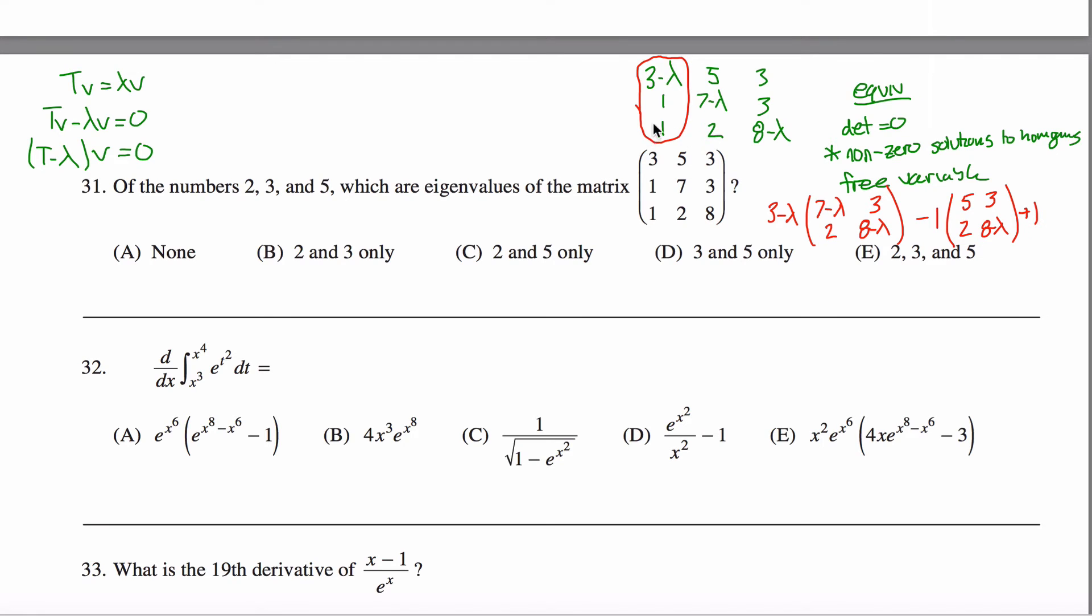And then plus 1 now, because I'm in this third entry here and I've alternated signs in this first column, 1 because of this one, and I want the determinant of, this row's gone and this column's gone. I'd have a 5, a 3, a 7 minus lambda, and a 3.